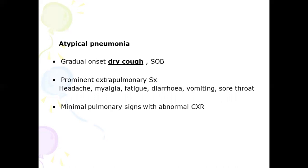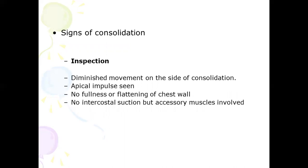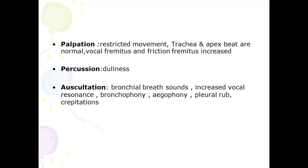On chest X-ray in atypical pneumonia, there will be minimal pulmonary signs with an abnormal chest X-ray. On clinical examination, you may find diminished movement on the side of consolidation, use of accessory muscles, and restricted movement on palpation. The trachea and apical beat are usually normal. Vocal fremitus and friction fremitus can be increased. Percussion over the involved area reveals dullness. On auscultation, you may find bronchial breath sounds, increased vocal resonance, bronchophony, egophony, pleural rub, or crepitations.